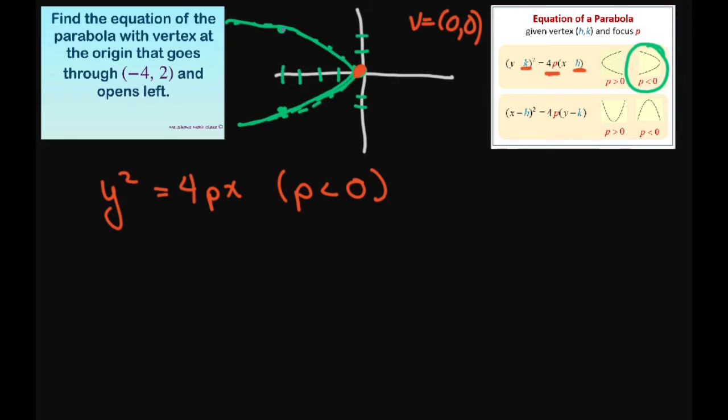Alright, this point here is going to be negative 4, 2. Alright, so since it's on the graph, let's substitute in our x and y. So we're going to get our y is 2, so 2 squared equals 4 times p and your x is negative 4.